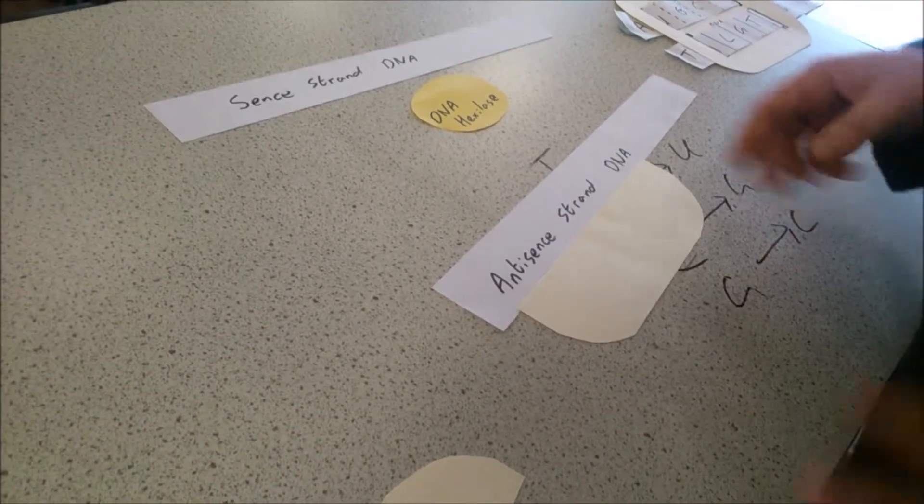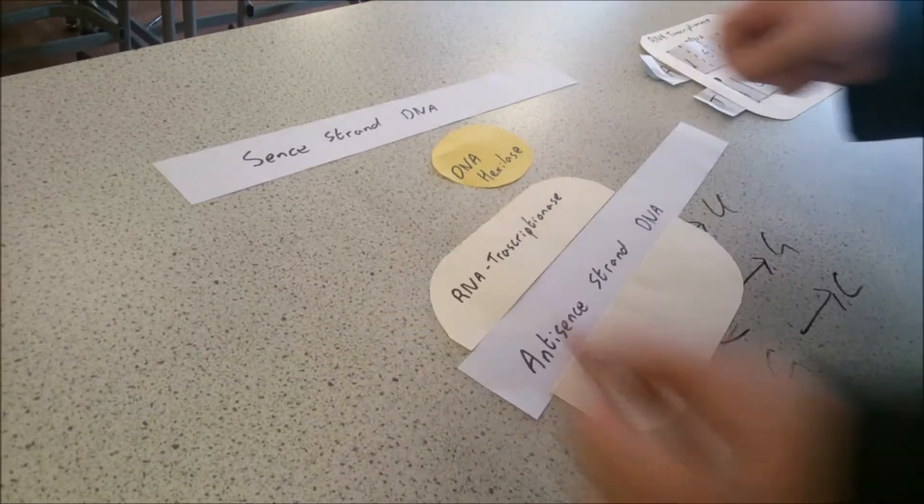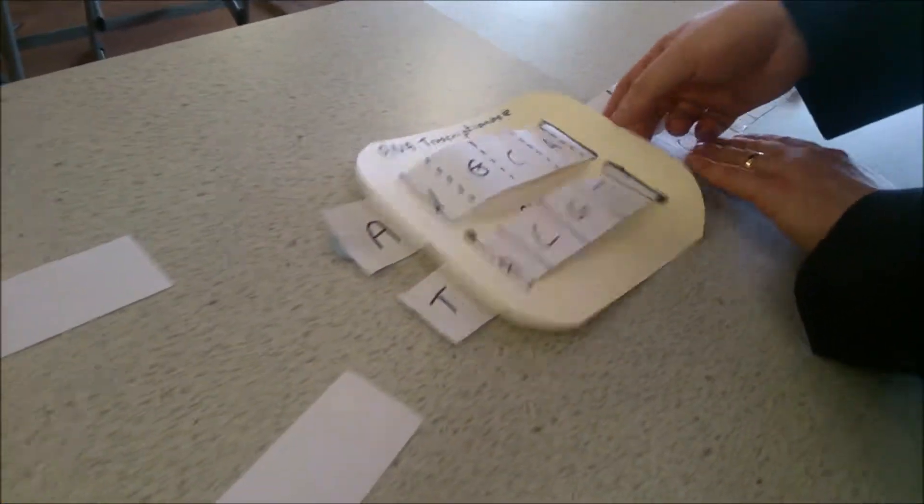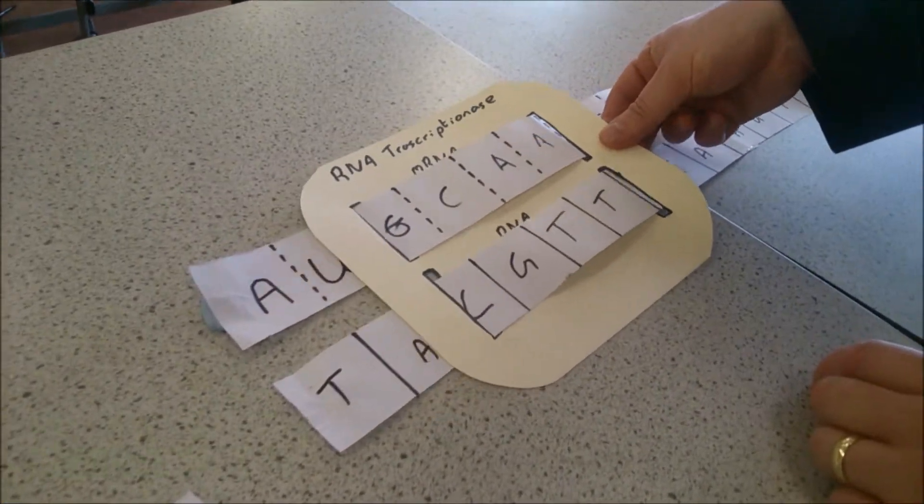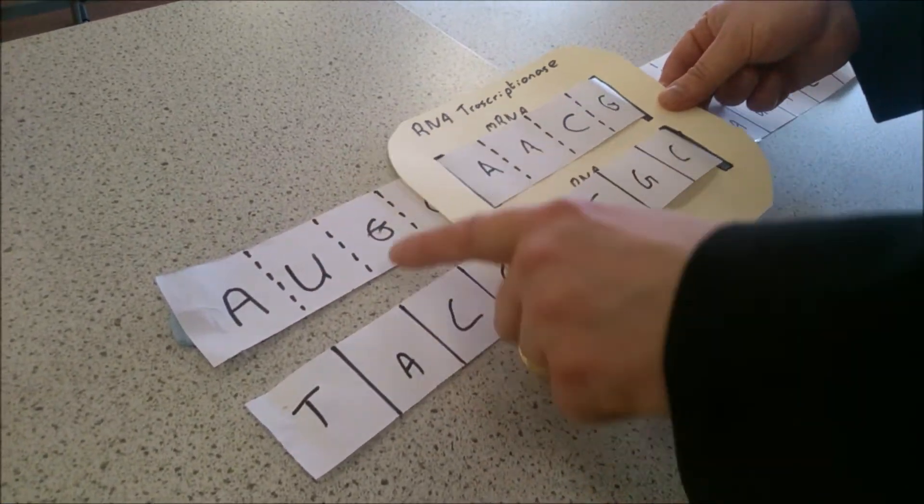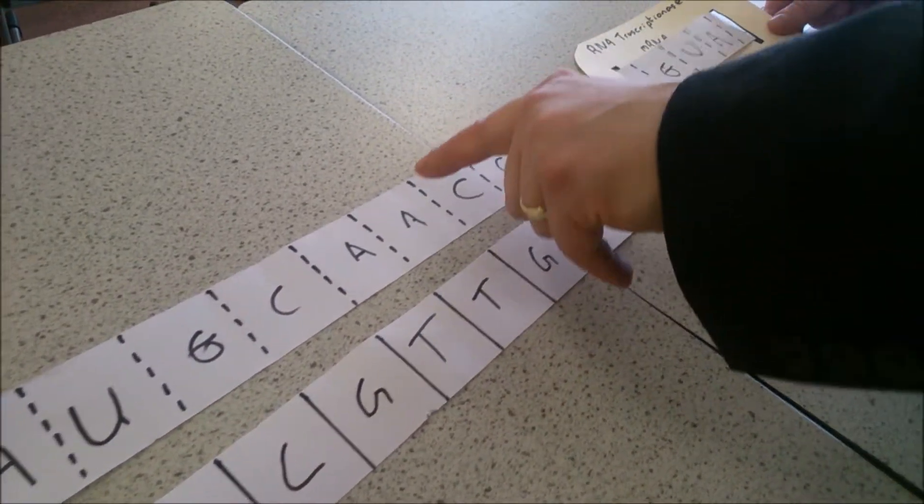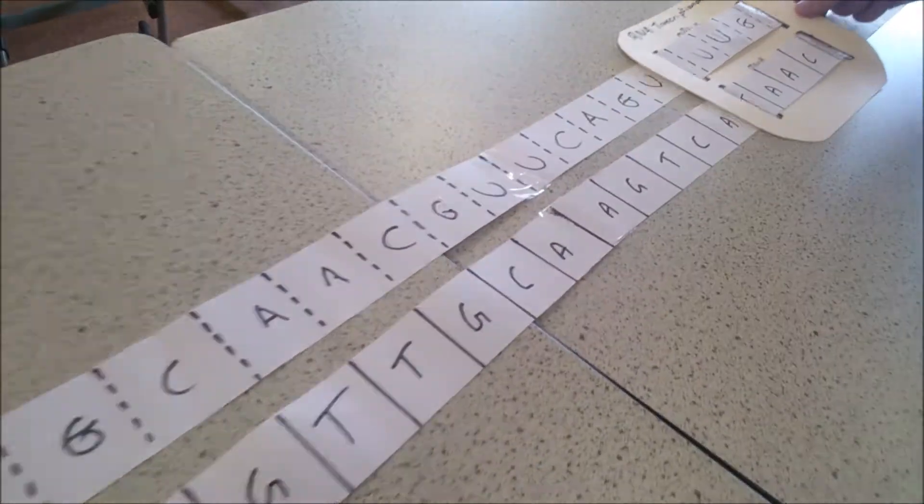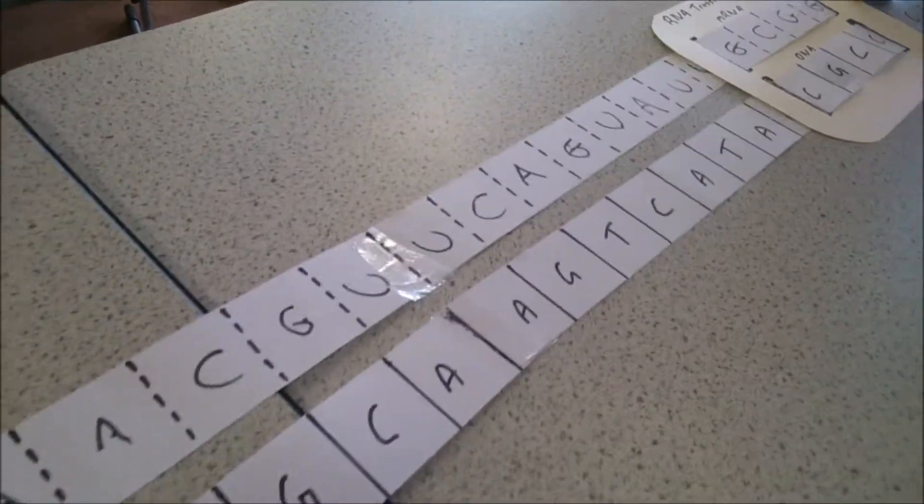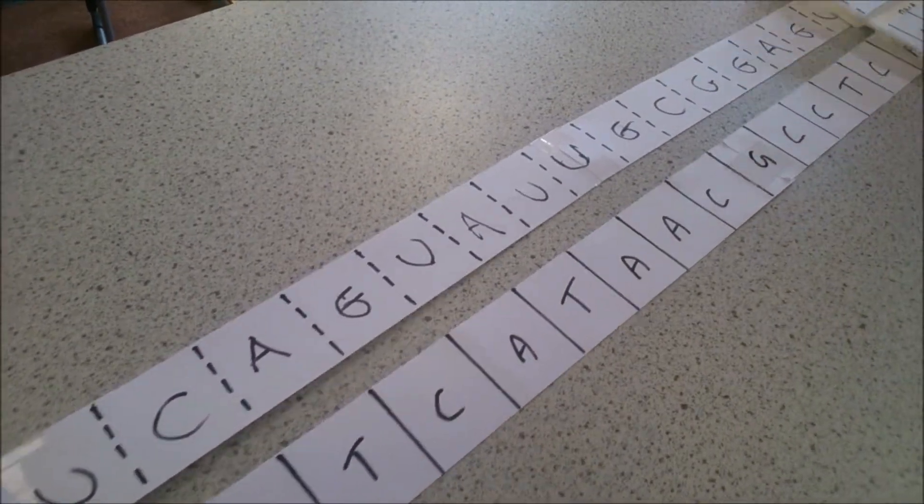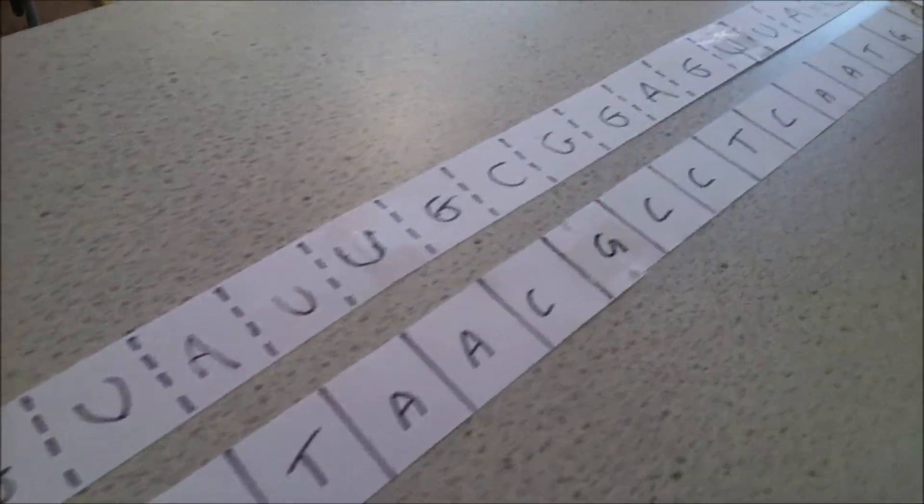RNA transcriptase finds the appropriate position on the DNA. As your RNA transcriptase moves down the DNA, complementary nucleotides go and join together using diester bonds to form a long strand of messenger RNA.